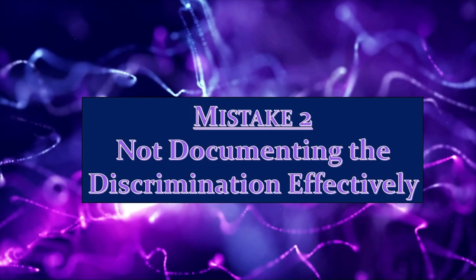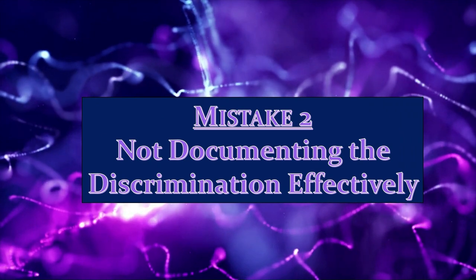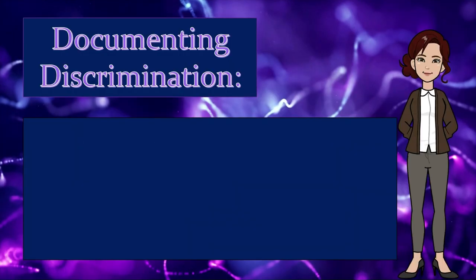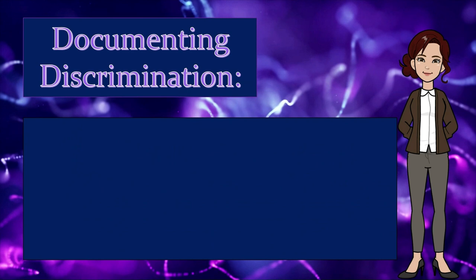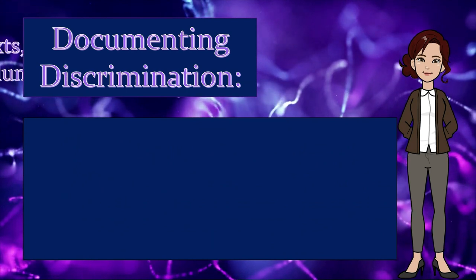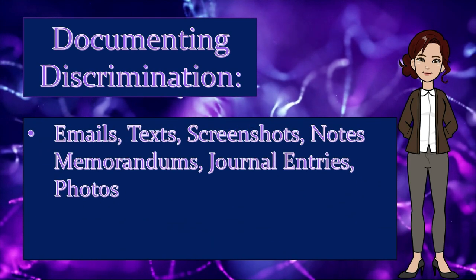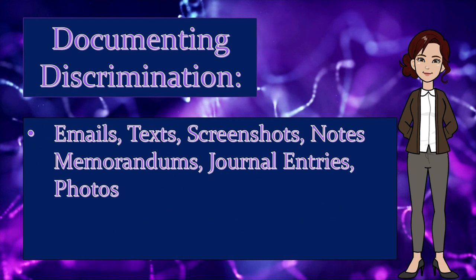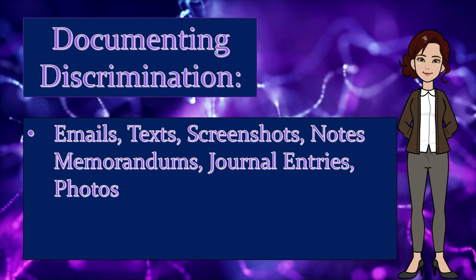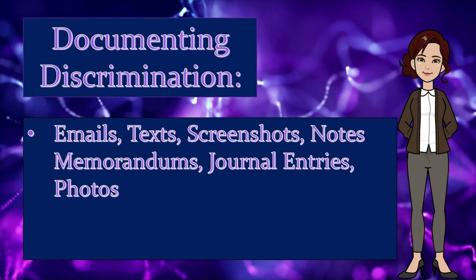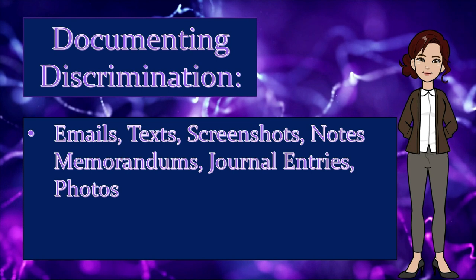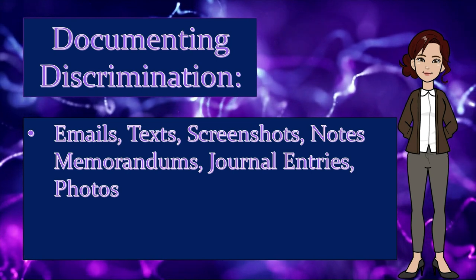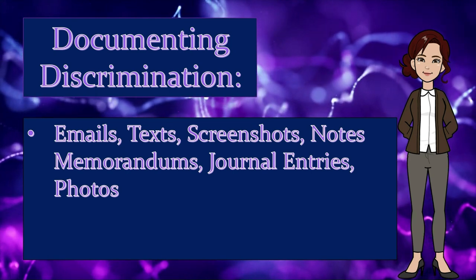Mistake 2 is not documenting the discrimination effectively. There are many ways to document discrimination: emails, texts, screenshots, notes, memorandums, journal entries, and photos. These methods of documenting discrimination will later become evidence.